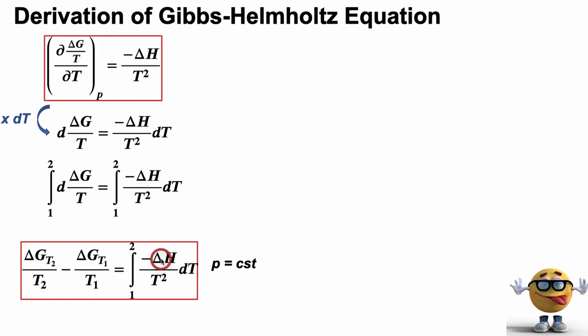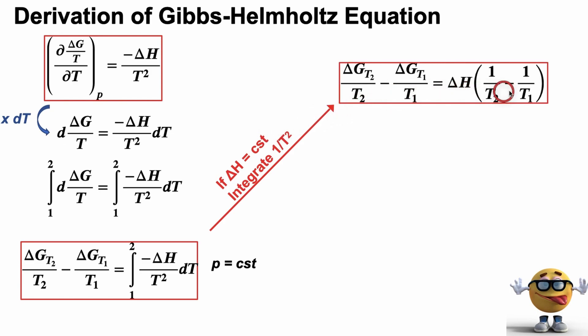So if we integrate dx, we're left with x from T1 to T2. The change in Gibbs energy at T2 over T2 minus the change in Gibbs energy at T1 over T1 equals the right-hand side. This is the integrated form of the Gibbs-Helmholtz equation if the enthalpy change is not constant. But generally, in most exams, we're going to assume this delta H is constant. And if delta H is constant, we can yank it out of the integral. We can yank out the negative as well. And then we're just integrating 1 over T squared.